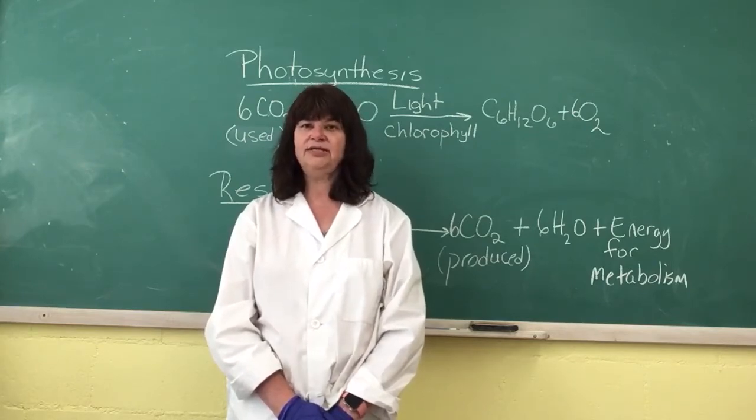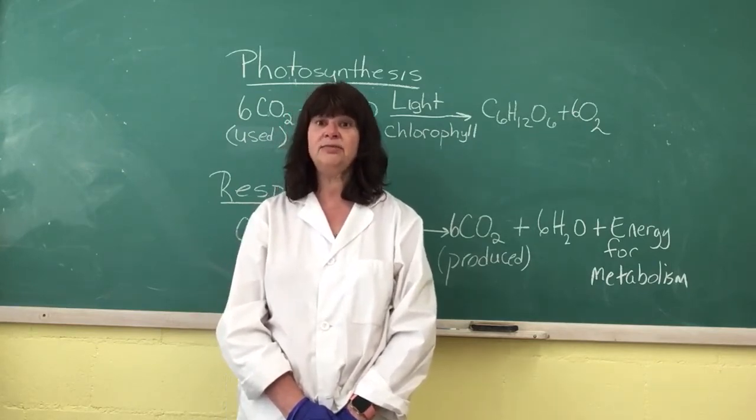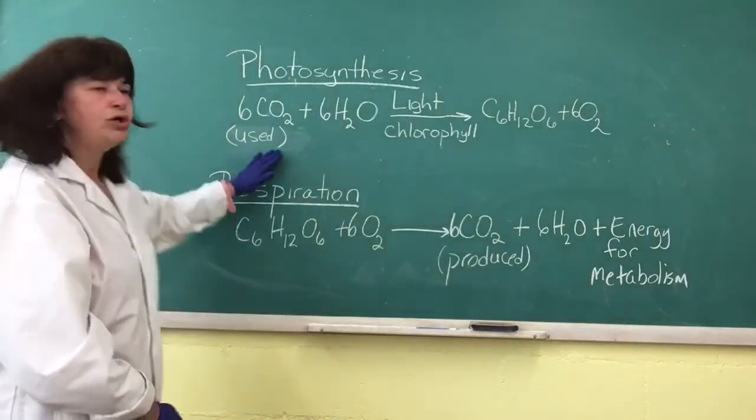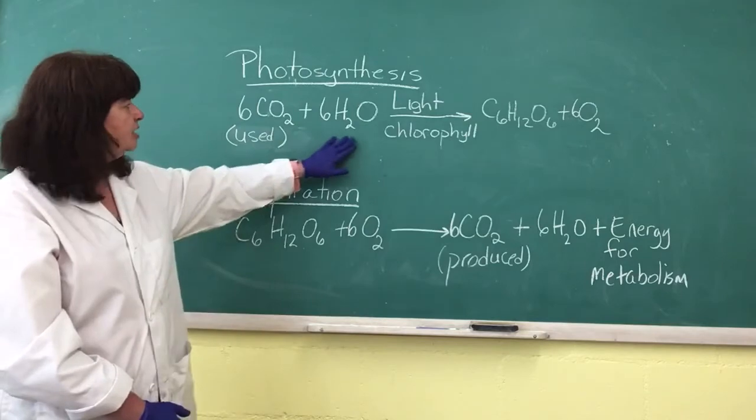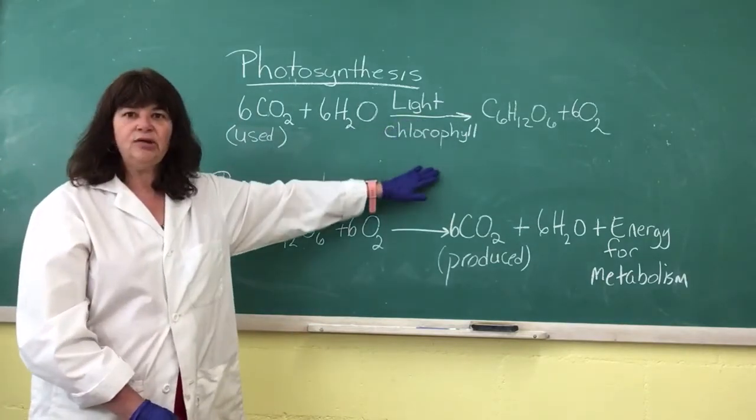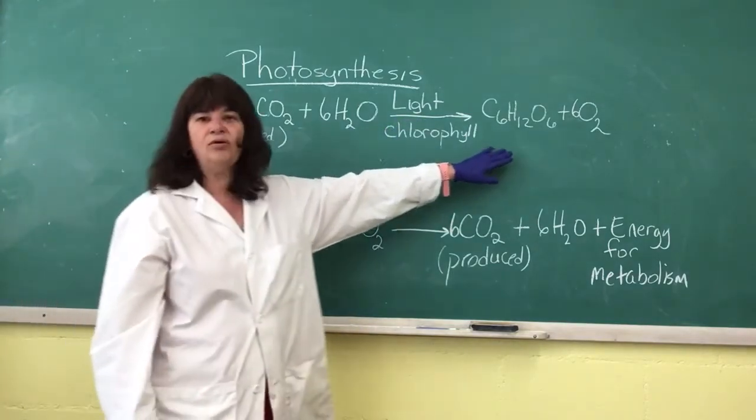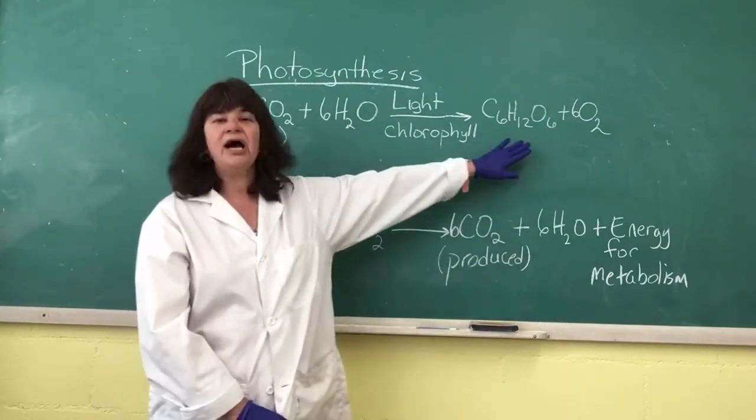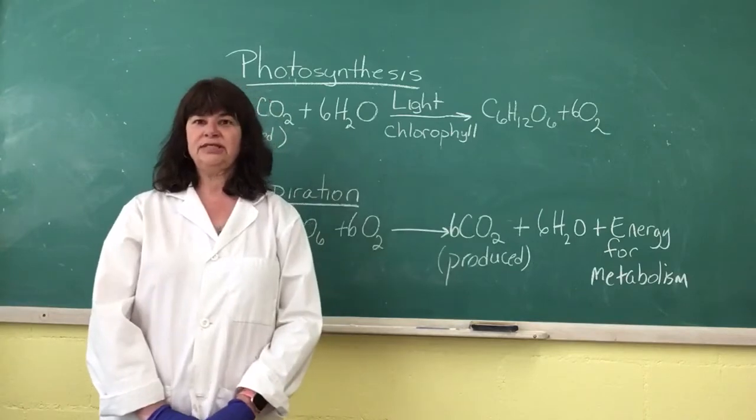Photosynthesis is a process whereby photosynthetic organisms take, as this equation shows you, CO2 plus water in the presence of light and chlorophyll to produce glucose and oxygen as a byproduct. So the main product of photosynthesis is sugars.